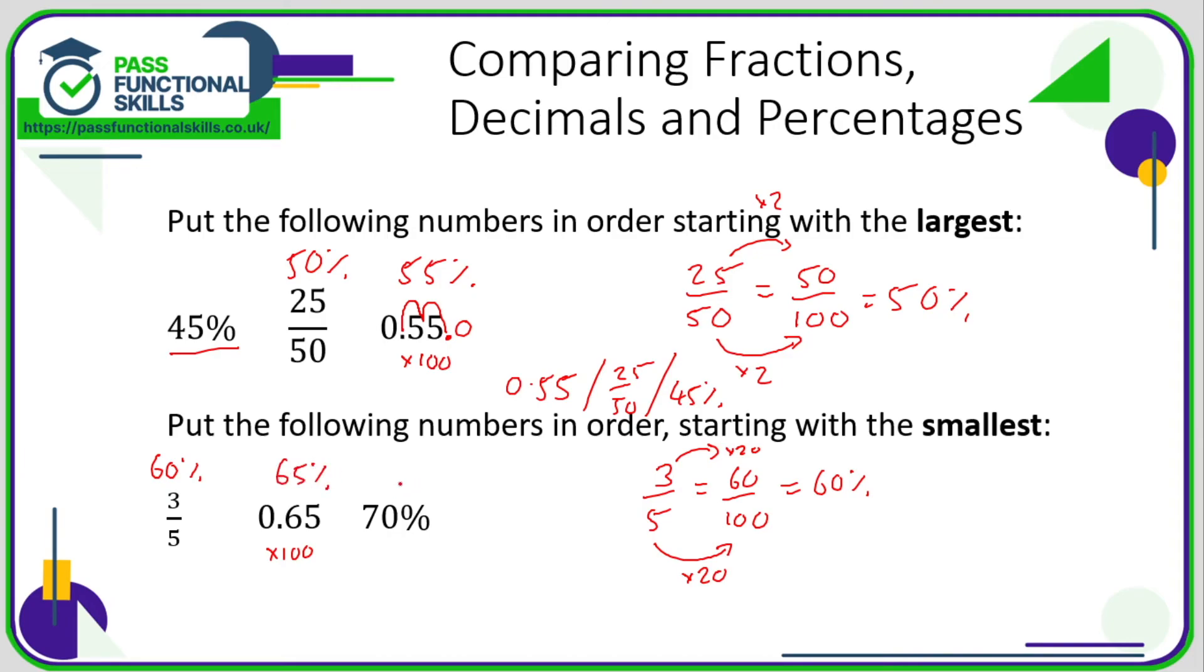So the smallest is going to be the 60 percent, so three-fifths. The next smallest is the 65 percent, which was the 0.65, and therefore the biggest is the 70 percent. So as you can see, if you just turn everything into percentages, then it makes the comparison so much easier.